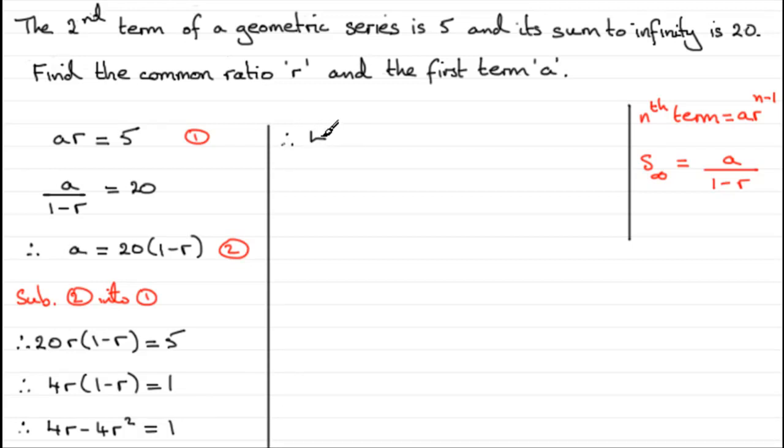We get 4r squared if I add 4r squared to both sides, subtract 4r from both sides, and then plus that 1 equals 0. And I should be able to factorize this one. If not I could use the quadratic equation formula. And this does factorize.